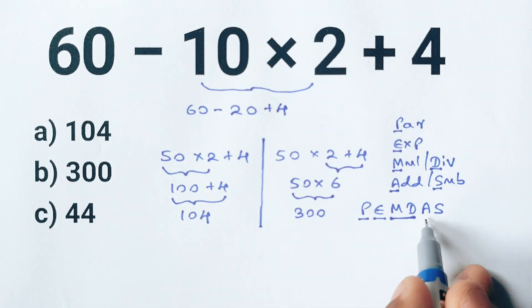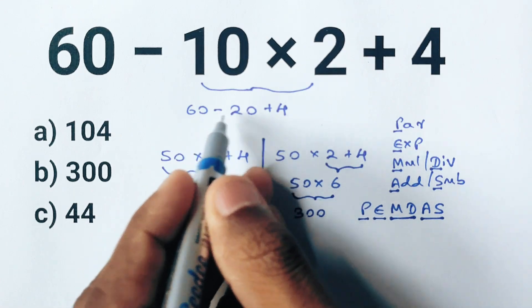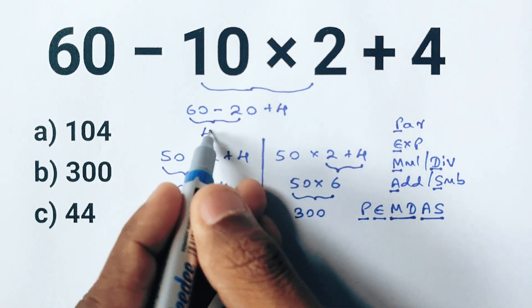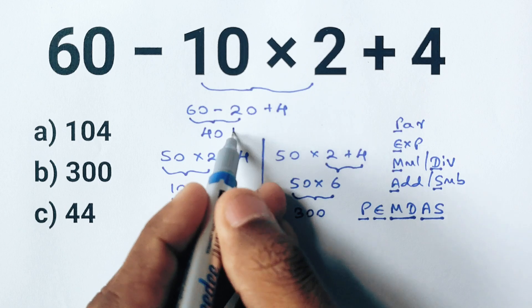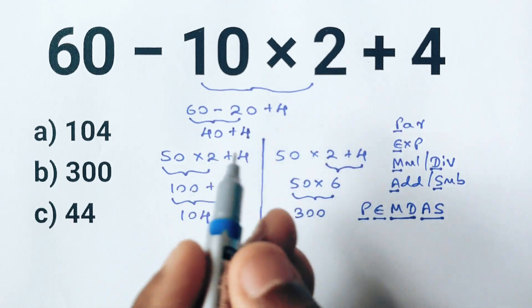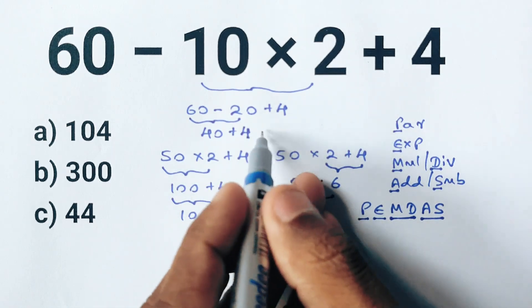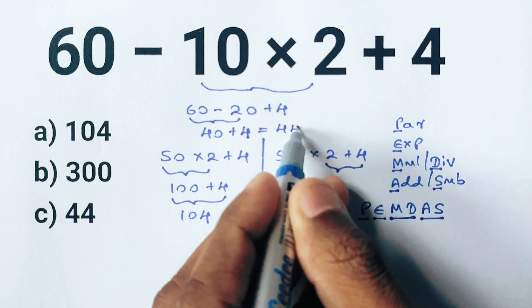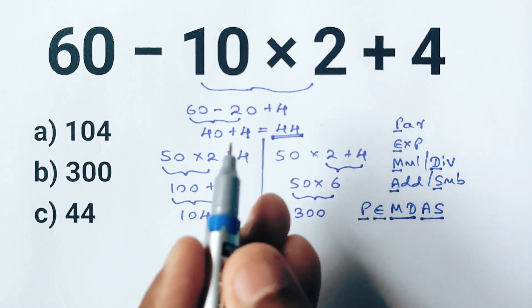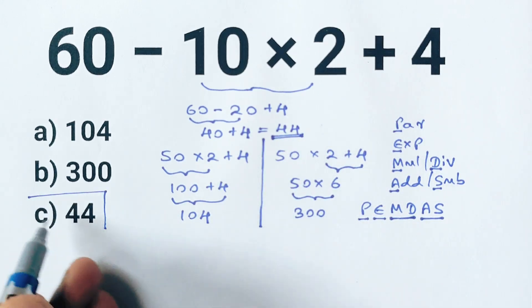Next we move on to addition and subtraction, again from left to right. 60 minus 20 is 40, then 40 plus 4 equals 44. So our final answer is 44, which means option C is the correct answer.